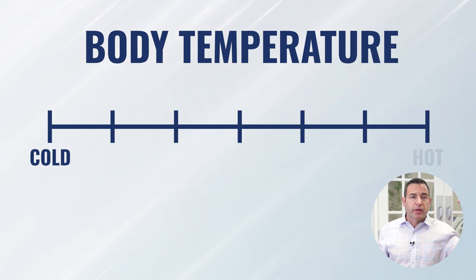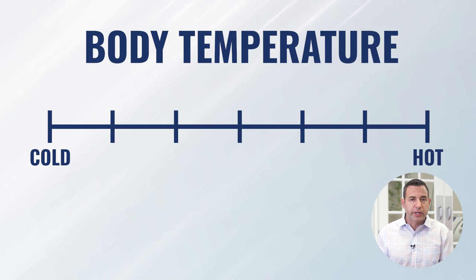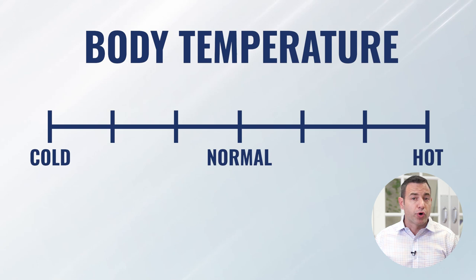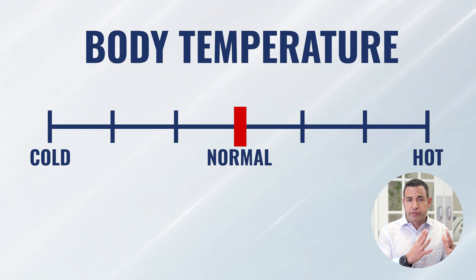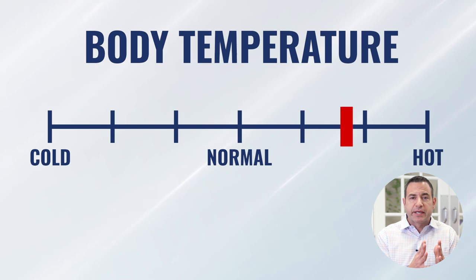Your body temperature and ability to maintain it sits right in the middle. As you expose yourself to cold therapy, your body temperature moves in that direction, and as you come back to some baseline, it moves back to homeostasis. As you're exposed to heat therapy, your body temperature increases, and as you leave the sauna and return to baseline, it moves back. That's normal physiology, and the autonomic nervous system is specifically what's regulating body temperature in the face of these therapies.